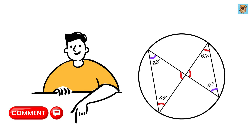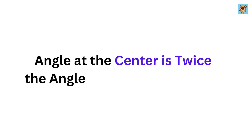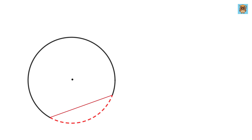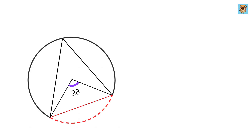The final theorem: the angle at the center is twice the angle at the circumference. The angle subtended by an arc at the center of the circle is always twice the angle subtended at the circumference by the same arc. So if the angle at the circumference is 40 degrees, the central angle will be 80 degrees. That wraps up our top 10 most important angle theorems.